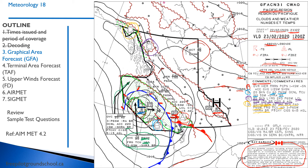Notice how close the isobars are together near this low — you can expect pretty strong winds. The wind goes from high to low but turns counterclockwise; you can see it's about 45 degrees off the isobars. Winds around this low are about 35 knots, whereas where isobars are far apart there won't be much wind.